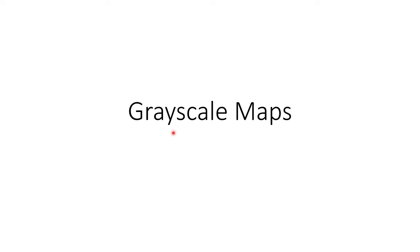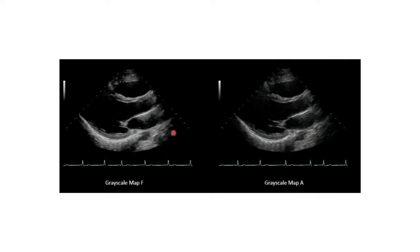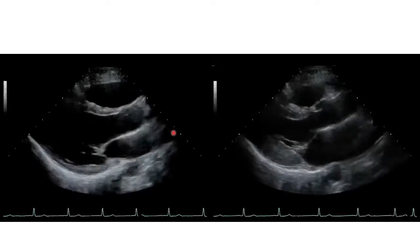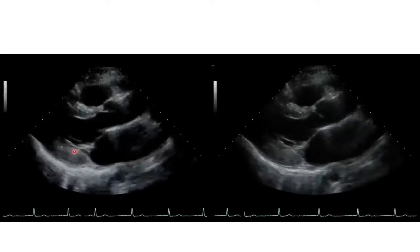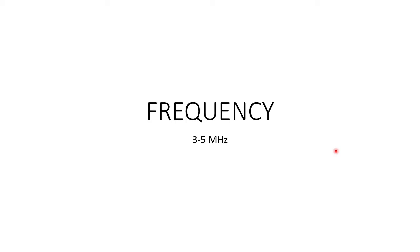First is the grayscale map. When we talk about 2D echo, we have the option of changing various grayscale maps. The manufacturer has put in various maps — that is, various shades of gray — and prepared various maps like Map A, Map F, and so on. Each map will have various shades of gray, and based on our preference we can choose which map we want. This is an example showing the difference between grayscale Map F and Map A — a video image showing the difference between the various maps. You can see there is a difference in the shade of gray, and it is our preference to choose which grayscale map to use.